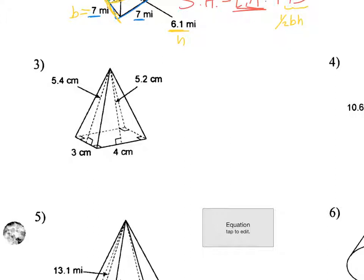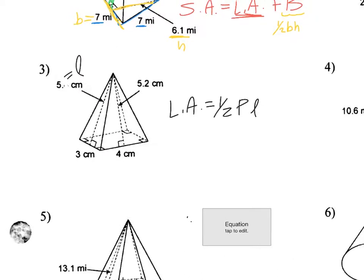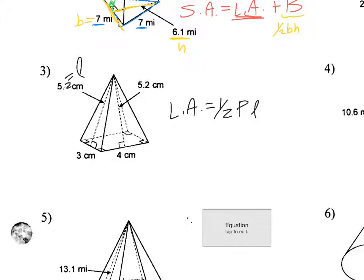Okay, number three. Lateral area is 1/2 PL. Okay, here's my L. 1/2. And, oh, sorry, this right here. This is a mistake. That right there is supposed to be 5.2. Also, sorry about that. That was a misprint. Okay. So make sure you correct that on your notes.